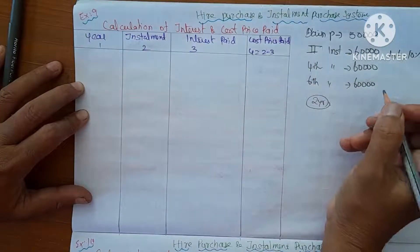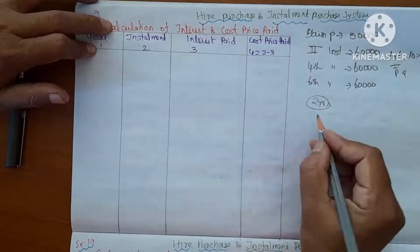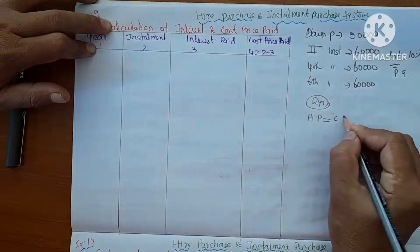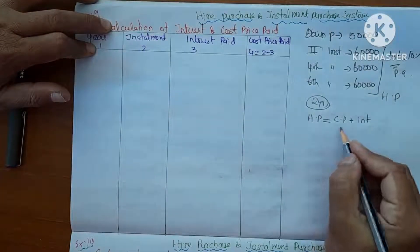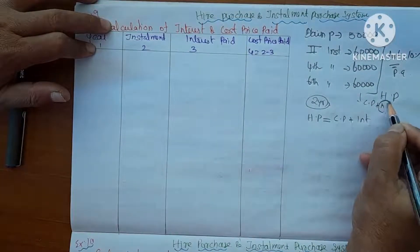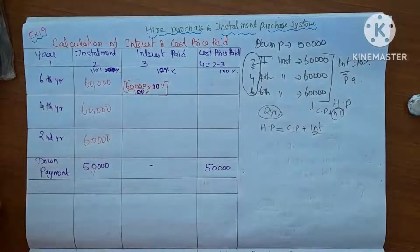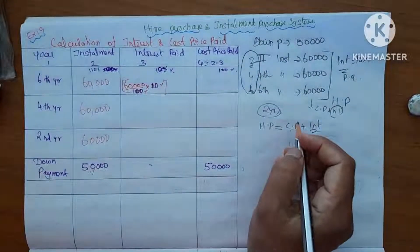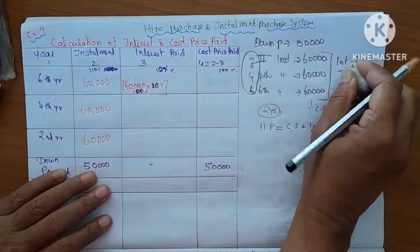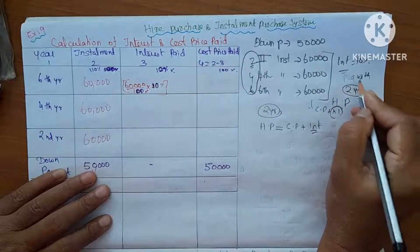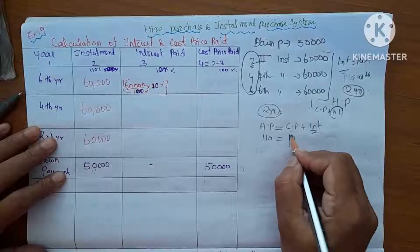The hire purchase price equals cost price plus interest. So if we know the hire purchase price, we can separate the cost and interest. The key assumption here is that higher purchase price is 110% and cost price is 100%, meaning interest is 10% of the cost price.